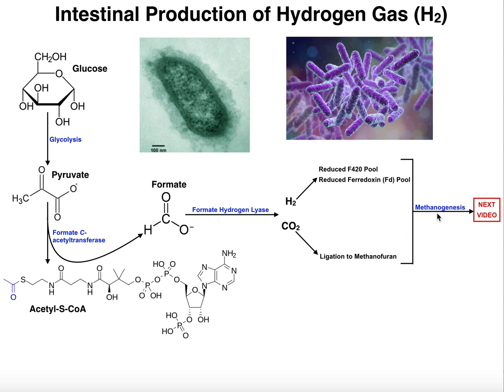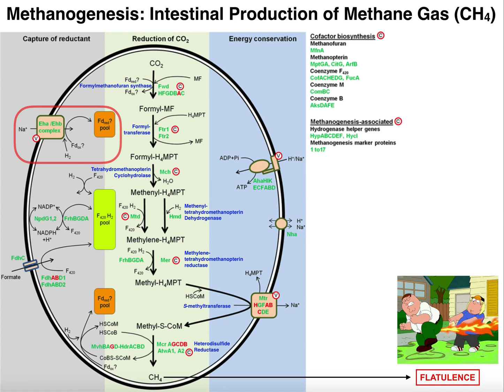The methane produced during methanogenesis is going to be released during flatulence — or in common speak, farting. So flatulence releases some quantity of methane into the atmosphere. Hydrogen gas is really a precursor to methane, because you cannot generate methane unless you have plenty of hydrogen gas. The same organisms generating hydrogen gas are also using that hydrogen gas and carbon dioxide to perform methanogenesis, which we'll talk about in the next video.